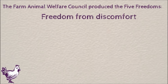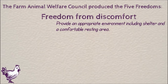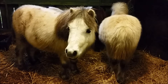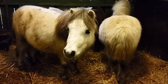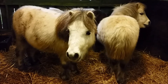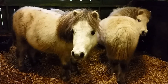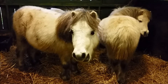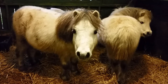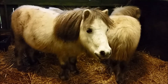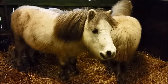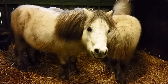The freedom from discomfort is mainly about an animal's environment, ensuring that an appropriate environment is provided. This depends on what an animal's behaviour suggests that it needs. For example, these ponies have nice deep bedding in their stable when they're kept indoors and plenty of room that allows them to lie down and stand up with ease.